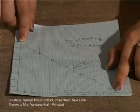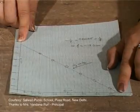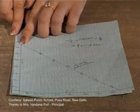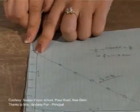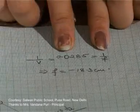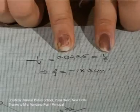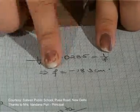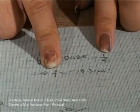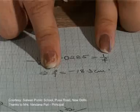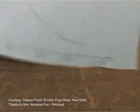This straight line intercepts the x and y axes at some points. Either of these intercept points can give the value of focal length. For example, taking the y-intercept value of 0.0285, since 1/U is zero on the y-axis, 1/V equals 1/F directly, giving a focal length of 18.3 centimeters. Like this, we can find out the value of focal length by three different methods: one by averages and two with the help of graphs. So we are through with the experiment of finding the focal length of the concave mirror.